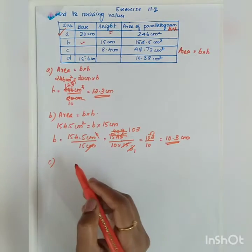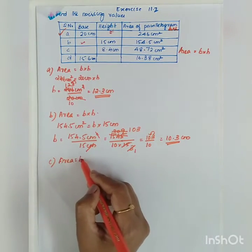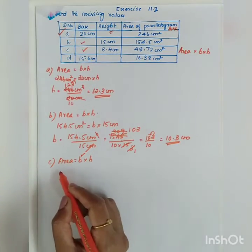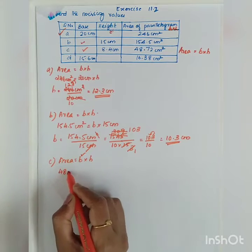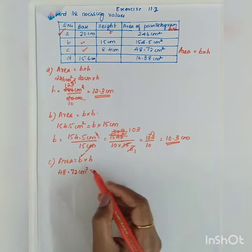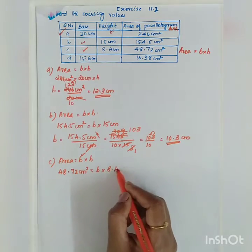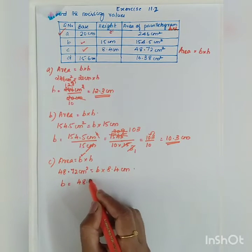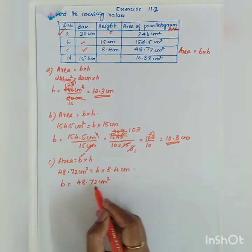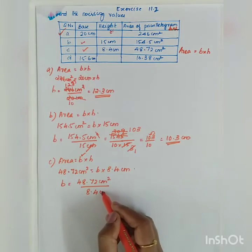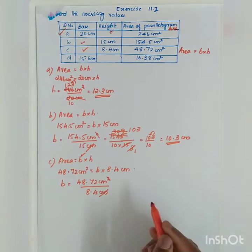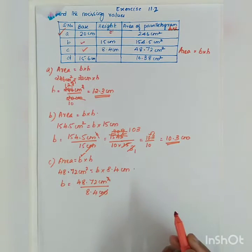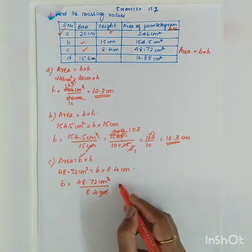Now the third one, Part C: area equals base into height. We have to find the base. The area given is 48.72 centimeter square, and the height is 8.4 centimeter. So base equals 48.72 centimeter square divided by 8.4 centimeter. Since both are decimals, we need to be very careful and convert to whole numbers.